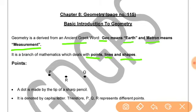What are points? A point is a dot made by the tip of a sharp pencil. It is denoted by capital letters such as P, R, Q. So we can say that P, Q, and R represent different points.